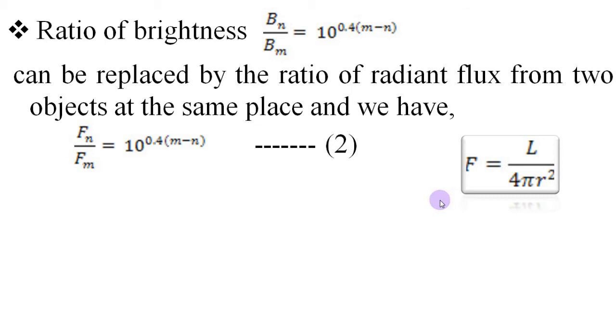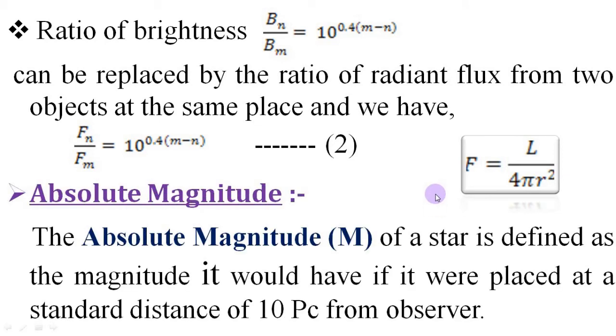Now, we could easily compare the true brightness of stars if we could line them all up at the same distance from us. With this idea, we define the absolute magnitude of a star, which is the magnitude it would have if it were placed at a standard distance of 10 parsec from the observer.